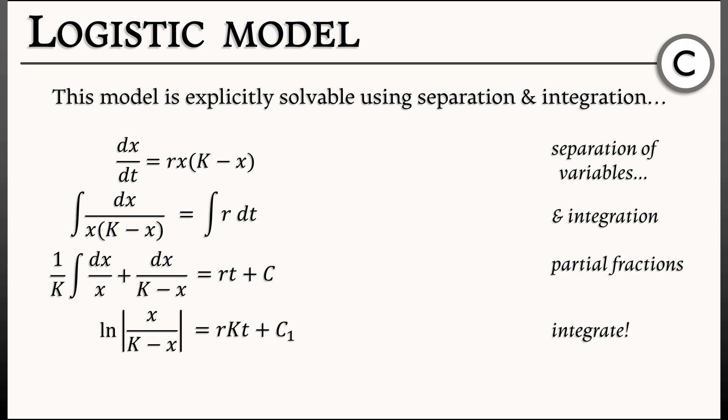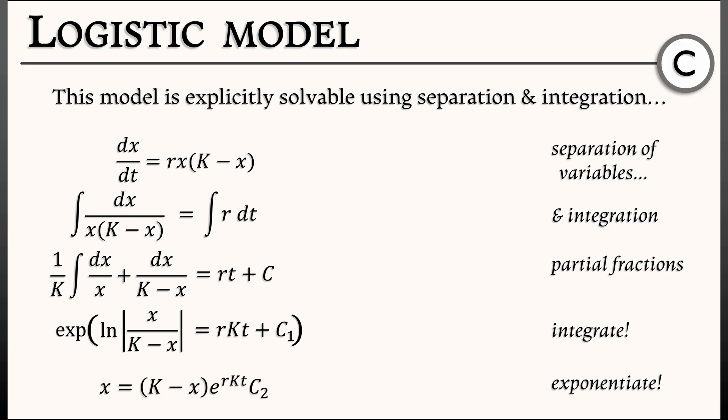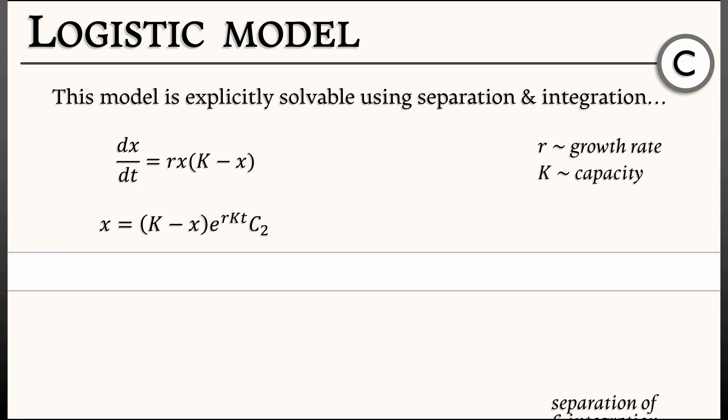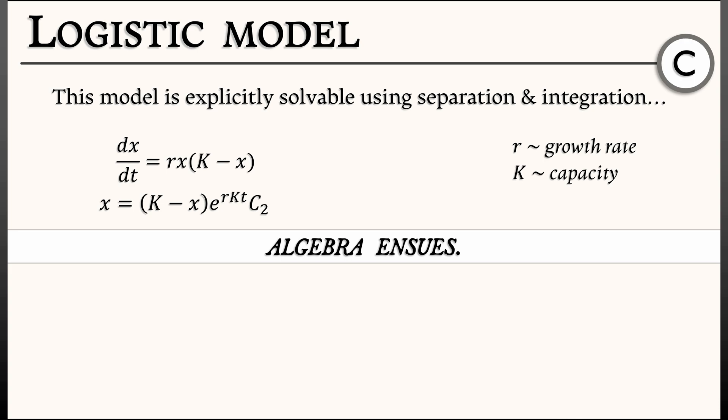Now that we've integrated, we need to isolate x. We exponentiate both sides — the exponential and the log cancel on the left. On the right-hand side, we exponentiate everything. Then we can multiply through by (k minus x), giving us x equals (k minus x) times e to the rkt times e to the c1.